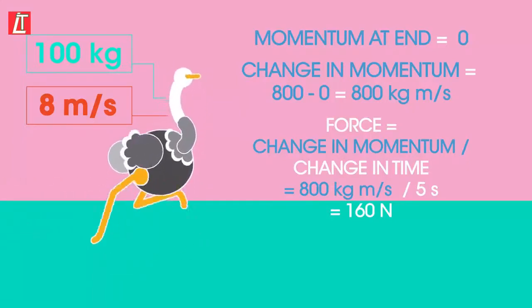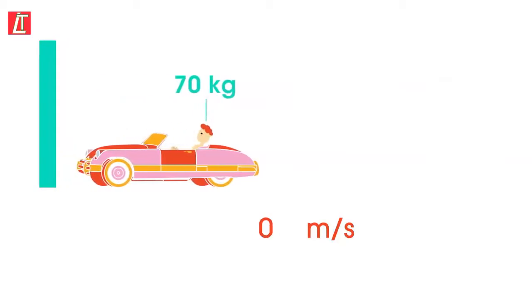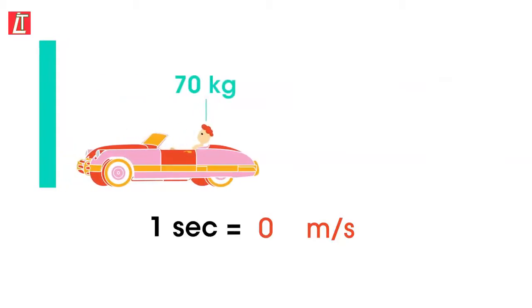Imagine a person with a mass of 70 kilograms is traveling in a car at 15 meters per second. The car comes to a complete stop in 1 second.